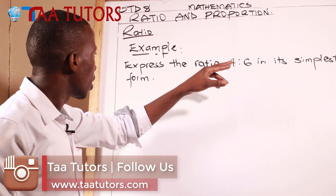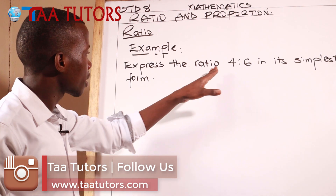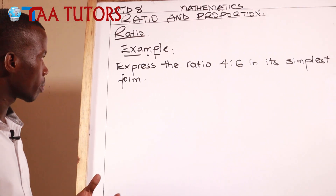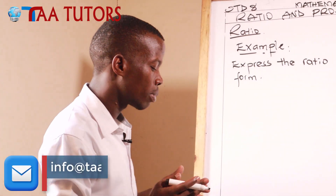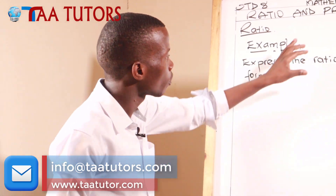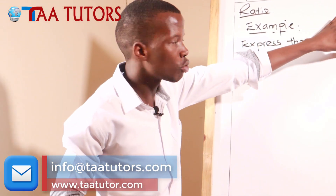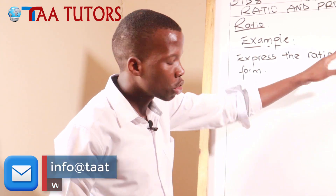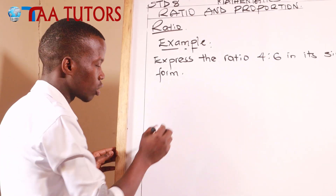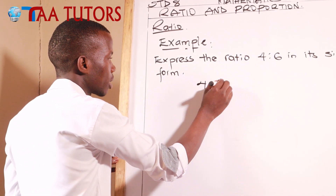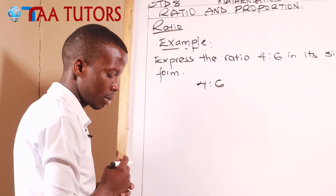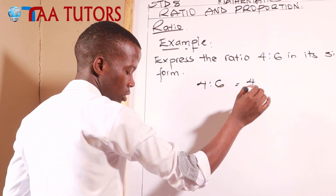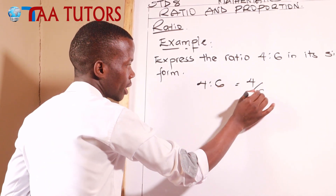We have been given the ratio 4 to 6 and we are told to express it in its simplest form. The first thing we have to do is make it in fraction form. For example, 4 to 6 in fraction form will be 4 all over 6.